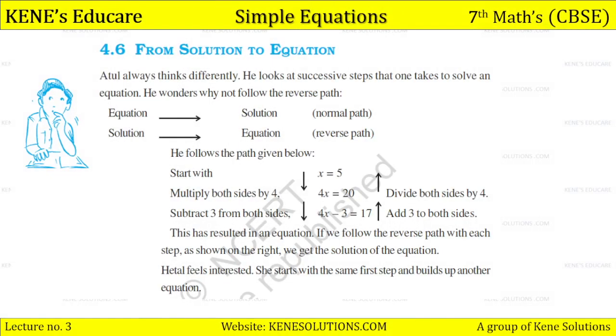From solution to equation: look, Atul always thinks differently. He looks at successive steps that one takes to solve an equation. He wonders why not follow the reverse path. Can you not follow the reverse path here? The equation is giving a solution. So he follows the path given below. Start with x equals 5. Multiply both sides by 4, so 4x equals 20. Subtract 3 from both sides, so 4x minus 3 equals 17. This has resulted in an equation. If we follow the reverse path with each step as shown on the right, we get the solution of the equation.